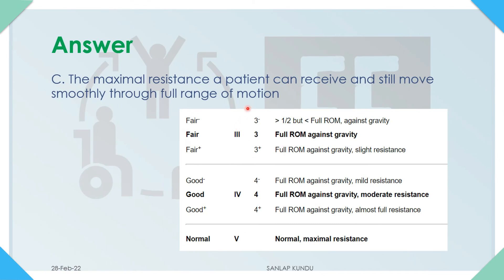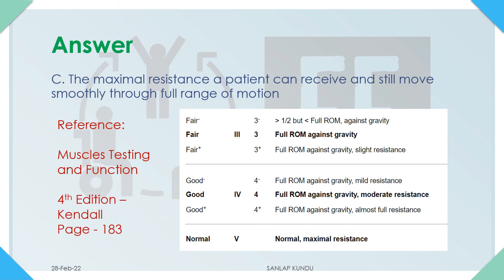Here is an MMT chart — from grade 3 onwards, grade 5 is normal, meaning maximal resistance. In this case the patient is provided with maximal resistance but can still move the part through full range of motion. For more detail, refer to the Kendall book, fourth edition, page 183.